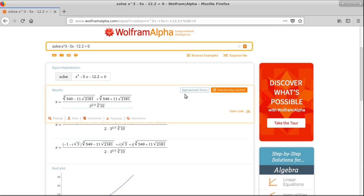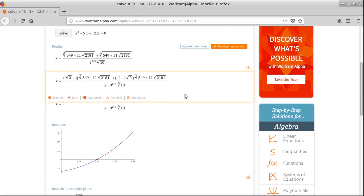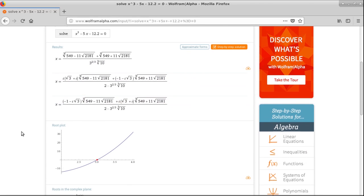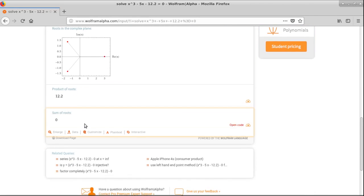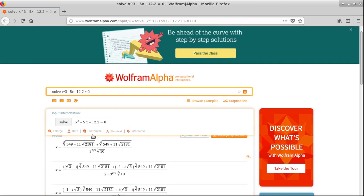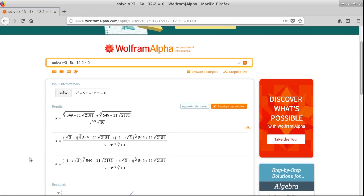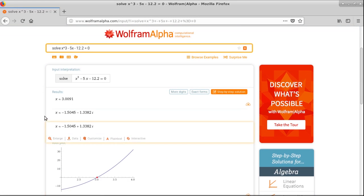So you'll see, they were just there a second ago. But you will see the three answers. Scroll down a little further, I guess. So let's say approximate forms. I had some decimals there to begin with. Here we go. 3.0091.